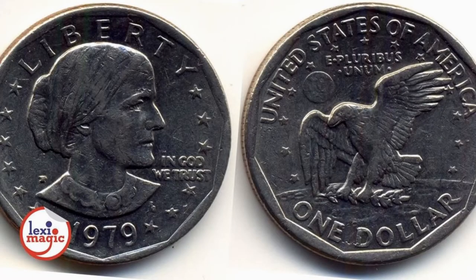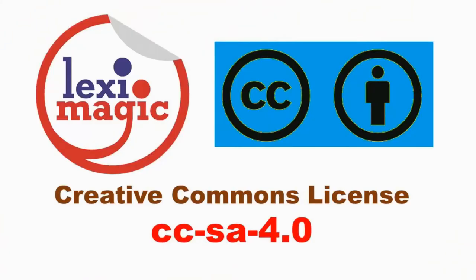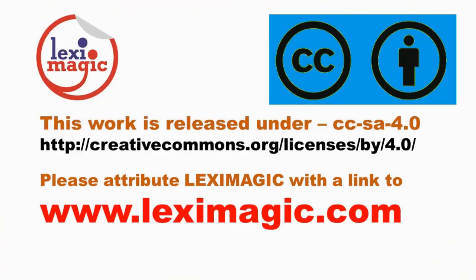Dollar. One dollar is equal to hundred cents. The name dollar came from Thala, which was a shortened form of Joachimstal, a place in Bohemia where silver was first mined for minting in 1519.